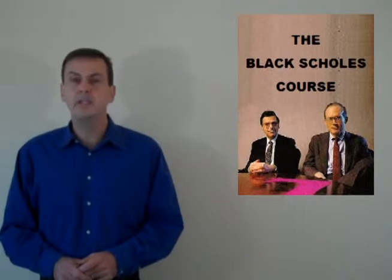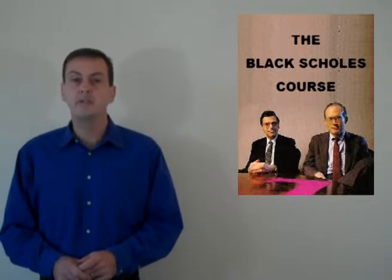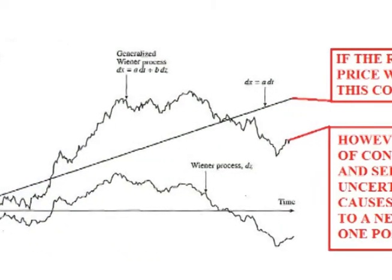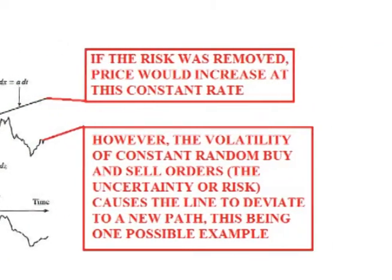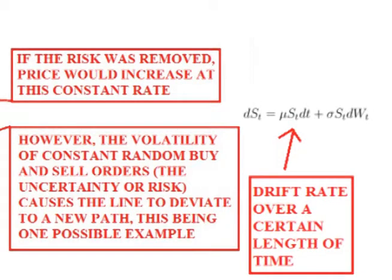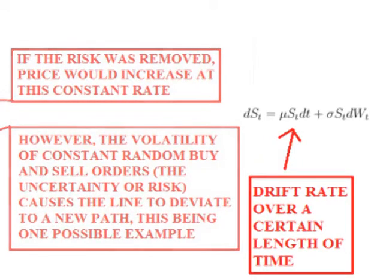In my recent videos, I explained that the Black-Scholes formula assumes that price follows a random walk process known as a geometric Brownian motion that has two driving forces: an overall general drift rate that all markets have, and the effect that constant random volatility has on that drift rate.